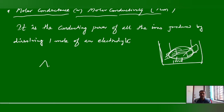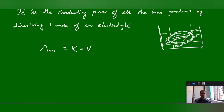In mathematical form, lambda M equals conductivity (K) multiplied by volume (V). Molar conductance is the conducting power of all the ions produced by dissolving 1 mol of electrolyte. If the volume of the solution is V, then K into V gives the molar conductance, because conductivity is an additive property — the overall conductance comes from adding all conductivities across unit volumes.